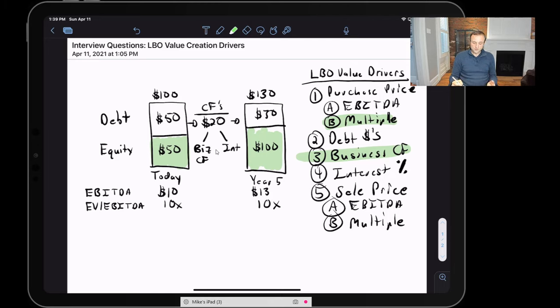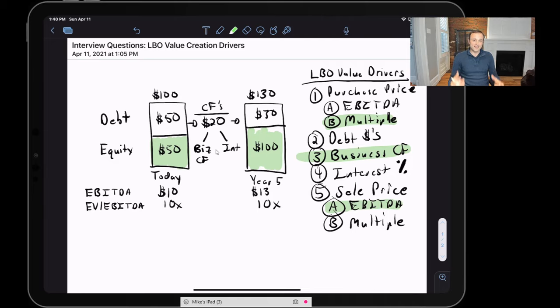Then we get to the sale price. When we sell a company or we model out the sale of a company for an LBO transaction, we typically hold the exit multiple constant for conservatism purposes. Assuming an expanding multiple is something that's very hard to predict into the future. So people tend to assume that that stays flat. So really what's driving the value creation with the sales price is our exit EBITDA.